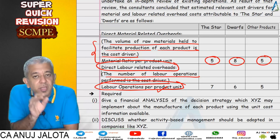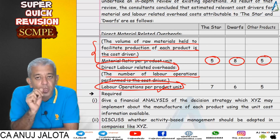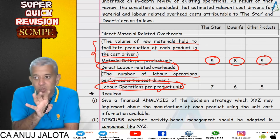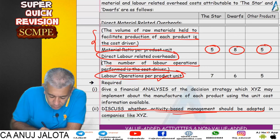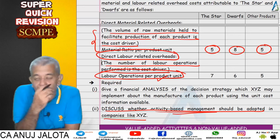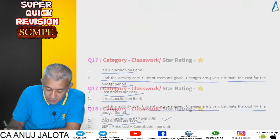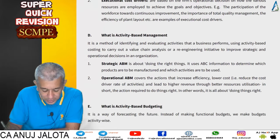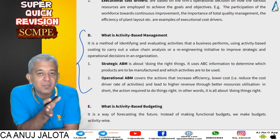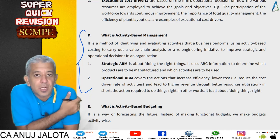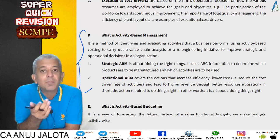Once we applied the cost drivers, answers were drastically different. We found the variable cost, contribution, and PV ratio again under ABC — and results were exactly opposite. As per activity based costing, the product that was previously bad is now good, and vice versa. Then the question asked: discuss whether activity based management should be adopted in companies like XYZ. Activity based management uses the data of ABC to find out which activity should be conducted and which should not — this is also called value chain analysis.